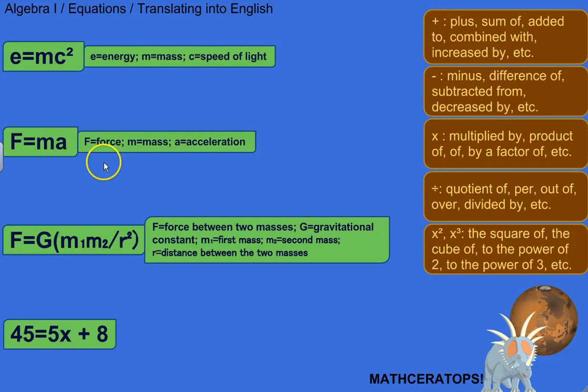Here we've got F equals M A. F stands for - I believe this is Newton's first or second law, I want to say second. F equals M A. F stands for force, M again is mass, and A is acceleration. So we could say force is the product of mass and acceleration, or force is the mass multiplied by the acceleration.